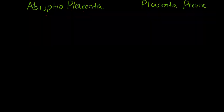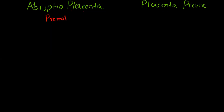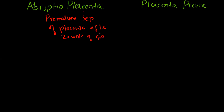Abruptio placenta is described as premature separation of placenta after the 20th week of gestation. The patient is going to present with painful vaginal bleeding.